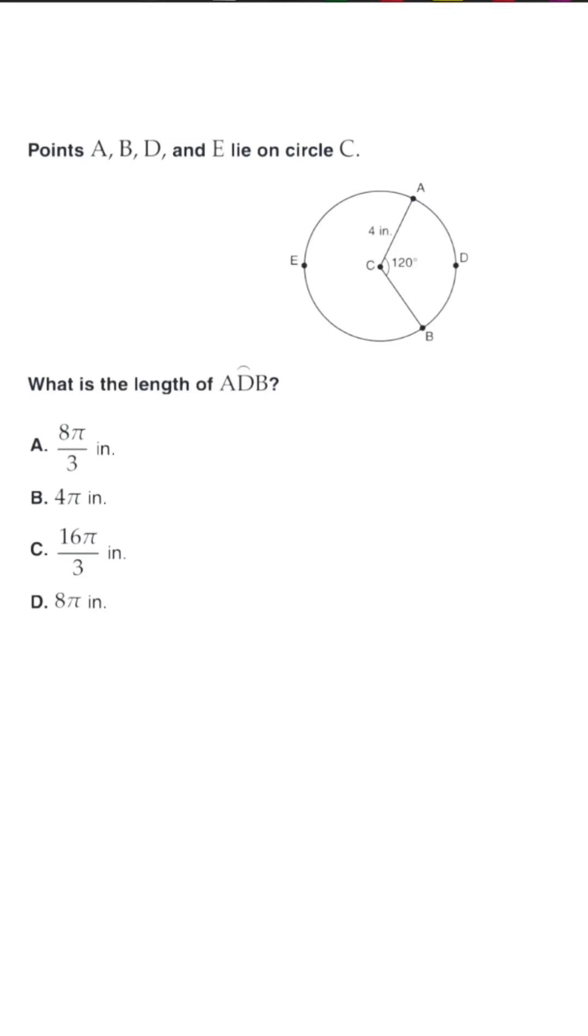This is for the arc length of ADB, and there's two ways that we could do this. So the first method, or the first formula, is theta over 360 multiplied by 2 pi r.